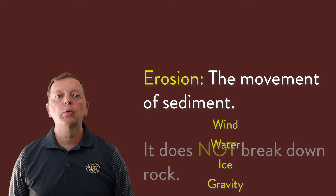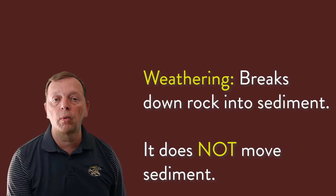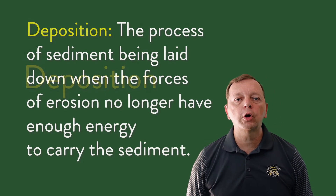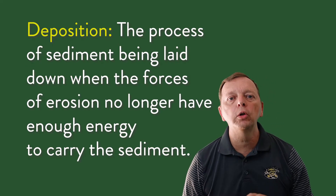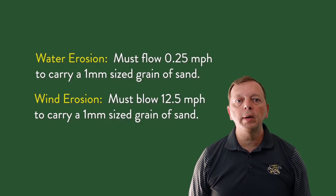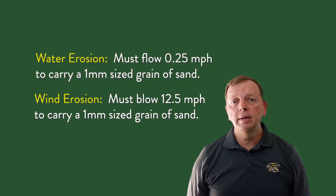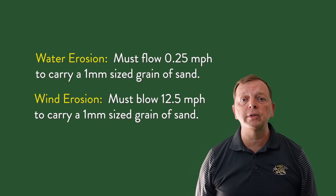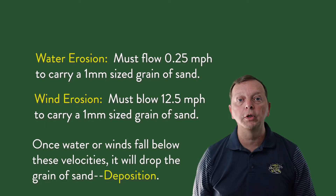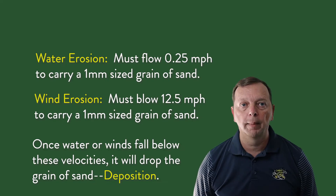Let's be clear: erosion does not break down rocks — it just moves sediment. And weathering breaks down rock into sediment, but it does not move it. Then there is deposition. Deposition occurs whenever the force eroding the sediment no longer has the energy to continue carrying it. A river needs to be flowing more than about a quarter mile per hour to move a grain of sand, and winds need to be blowing faster than about 12.5 miles per hour to pick up and move sediment. Once the speed drops below these thresholds, it will begin to drop the sediment it is carrying — this is called deposition.